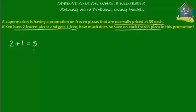For this promotion to be effective, you must only buy in sets or multiples of three. So if you buy three pizzas, you get the promotional price. If you buy six pizzas, you get the promotional price. If you buy nine pizzas, and so on — but they must be multiples of three.